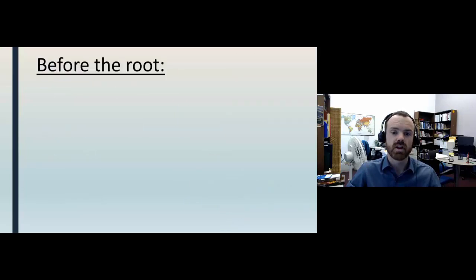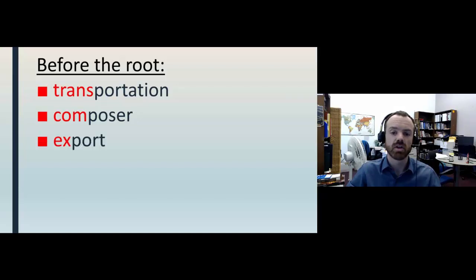So we've talked about two roots and the different words that use them. There is another important part in most of the words we just looked at. The small part that comes before the root, like trans, com, and ex. These are called prefixes. They also come from Latin and always come before the root. They add meaning to the word in important ways.